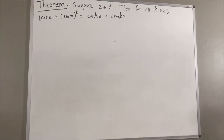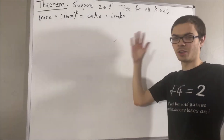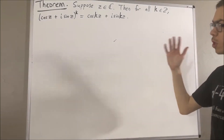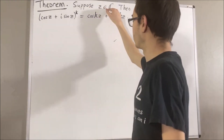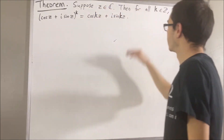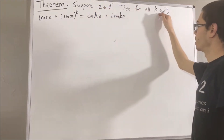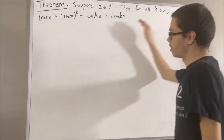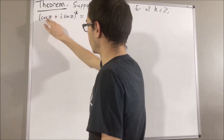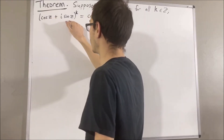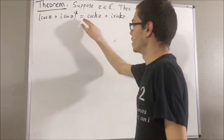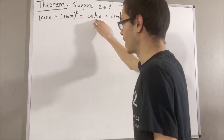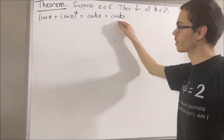Hello! In this video, we are going to prove the following theorem. Suppose z is a complex number. Then, for all integers k, cosine of z plus i sine z to the power of k is equal to cosine of kz plus i sine of kz.